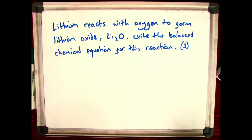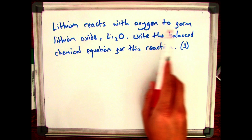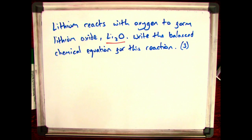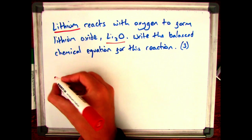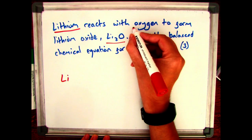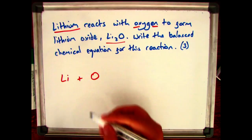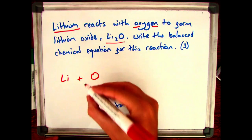Let's have a look at balancing equations involving metals and oxygen. So here we have lithium reacted with oxygen to form lithium oxide, Li2O — the balanced chemical equation for this reaction. Your first step is to find lithium on the periodic table, which is Li, and then oxygen — you need to remember — is diatomic, so instead of O, you need to have O2.